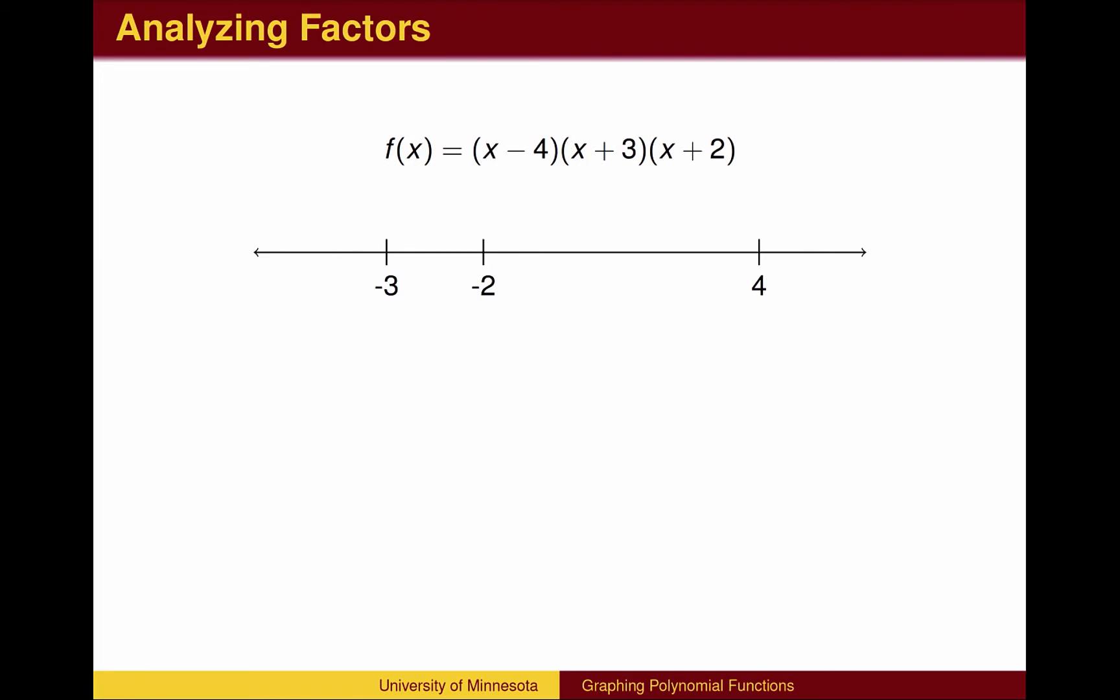We can keep track of the end behavior and more in another way, by analyzing the factors. Each of the factors corresponds to an x-intercept. The x-intercepts are the points at which a factor changes from negative to positive. We can figure out whether f(x) is positive or negative based on the factors. If we pick any number larger than 4, for example 5, each of the factors is positive. When we multiply three positive factors together, we get a positive answer. Therefore, at the right of the graph, we will have positive y values, and therefore the graph will be going up.